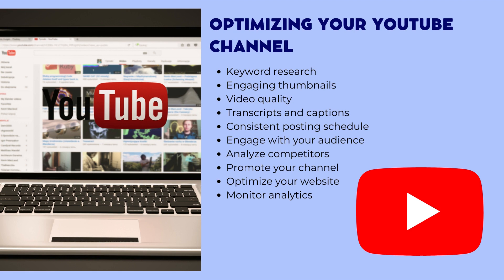Optimizing your YouTube channel: in addition to building backlinks, optimize your channel and videos for maximum SEO benefits. Keyword research: conduct thorough keyword research to identify popular search terms relevant to your niche and incorporate these into your video titles, descriptions, and tags. Engaging thumbnails: design eye-catching custom thumbnails that accurately represent your video content to increase click-through rates and help your videos rank higher. Video quality: ensure that your videos are high quality, well-edited, and visually appealing to improve audience retention and engagement, leading to better rankings. Consistent posting schedule: maintain a consistent posting schedule to keep your audience engaged and encourage them to subscribe, improving your overall visibility in search rankings.